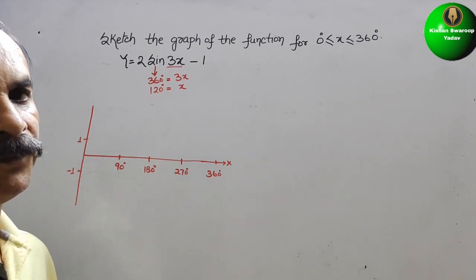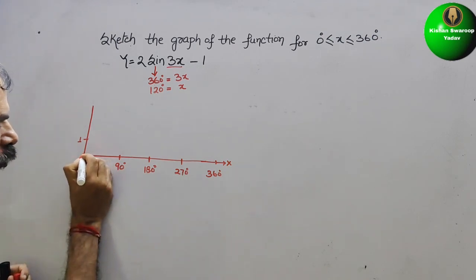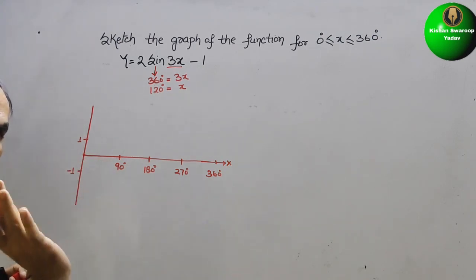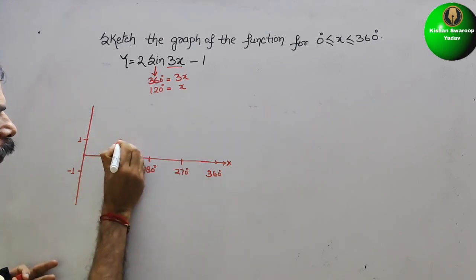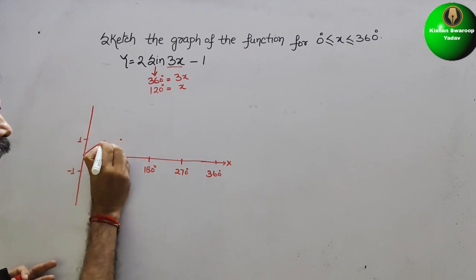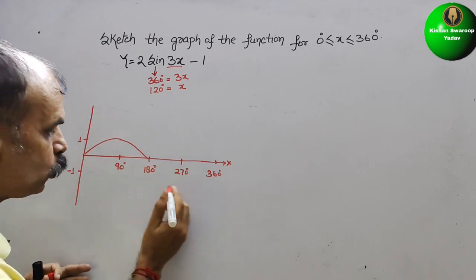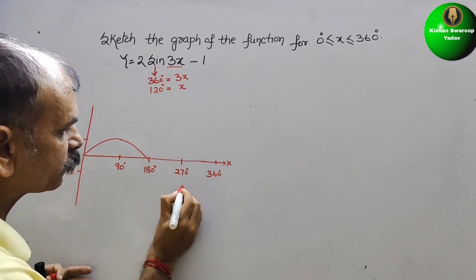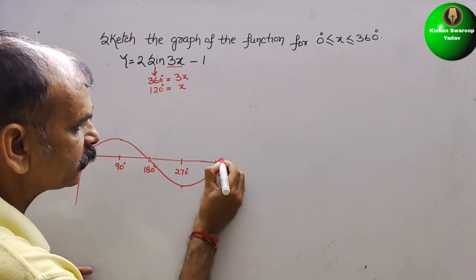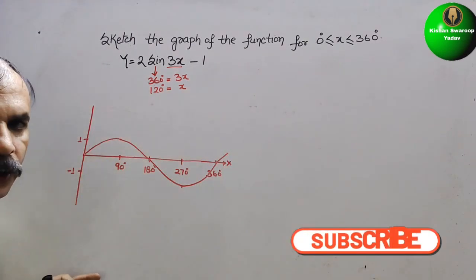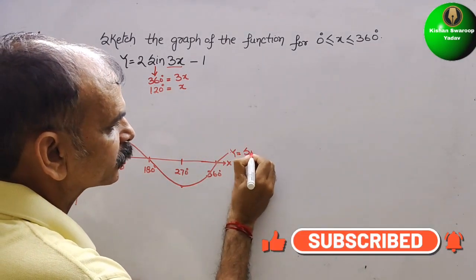The normal sine wave starts at 0: sin(0°) = 0, sin(90°) = 1, sin(180°) = 0, sin(270°) = -1, and sin(360°) = 0. This wave represents y = sin(x).